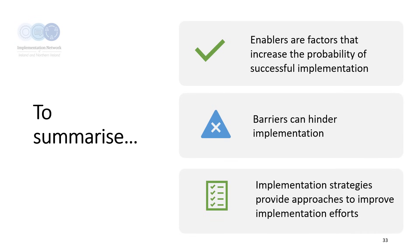To summarize, implementation is the how we put a plan into action. To increase the likelihood of a successful implementation, you need to analyze enablers — factors that increase the probability of successful implementation — and look at barriers, which hinder how you will do things. These help you understand the context of where you are working and assist you in tailoring your plan and identifying which combination of strategies will lead to the most successful outcome.